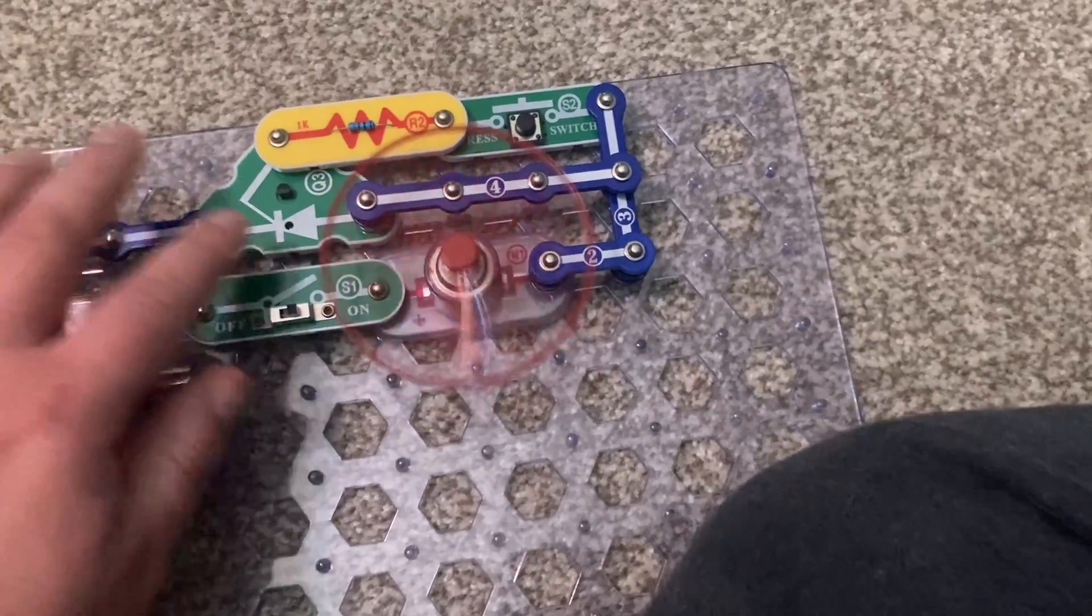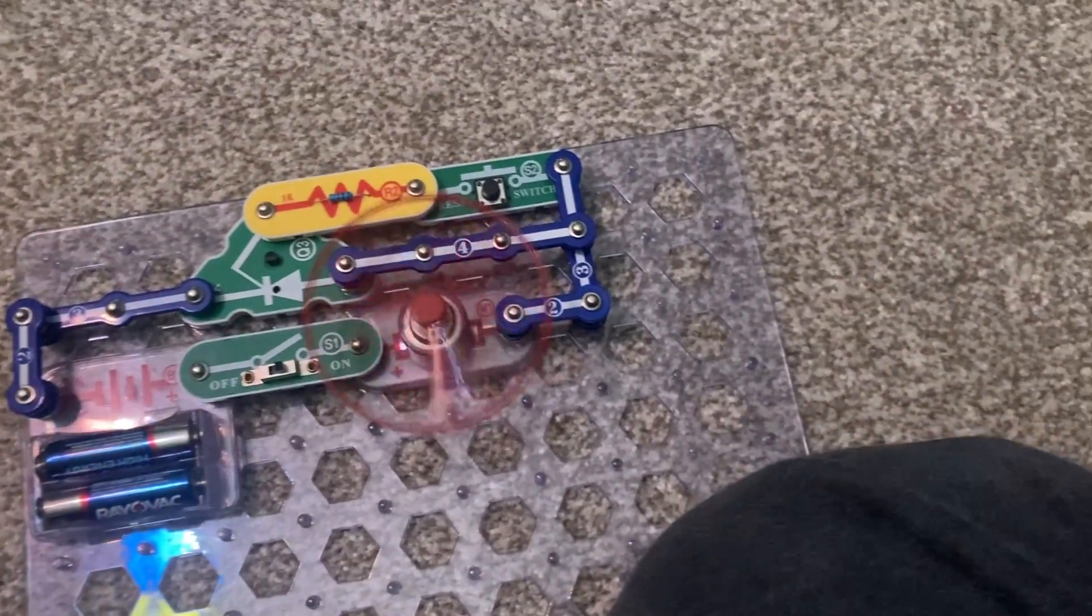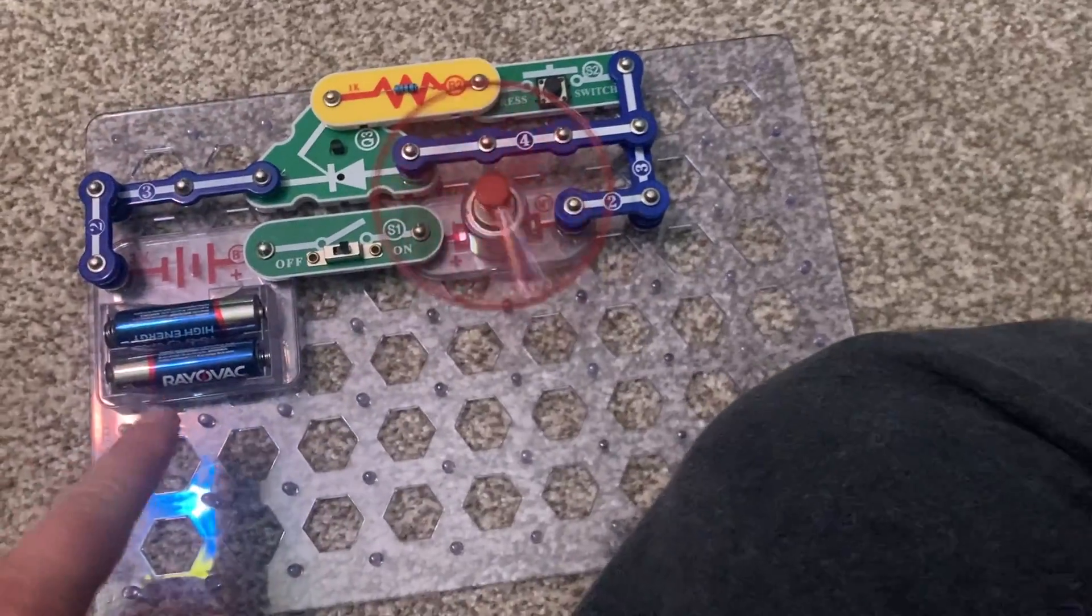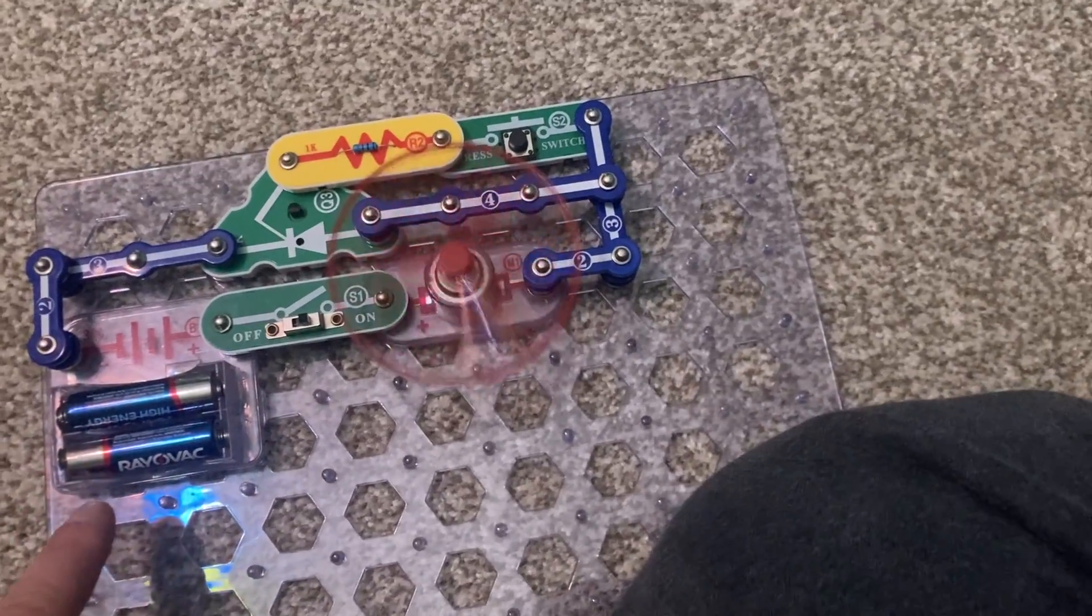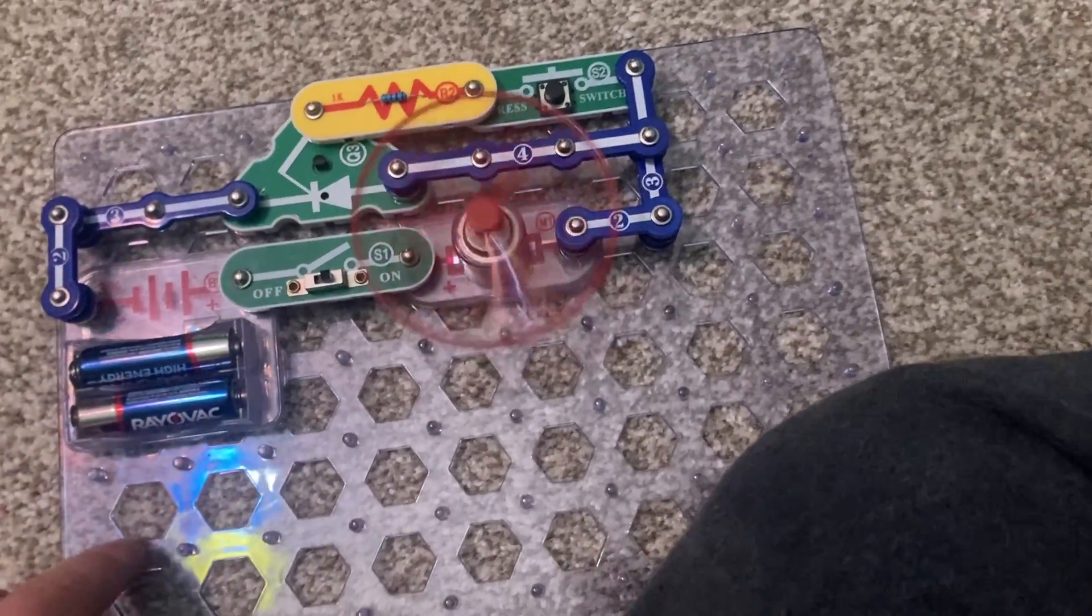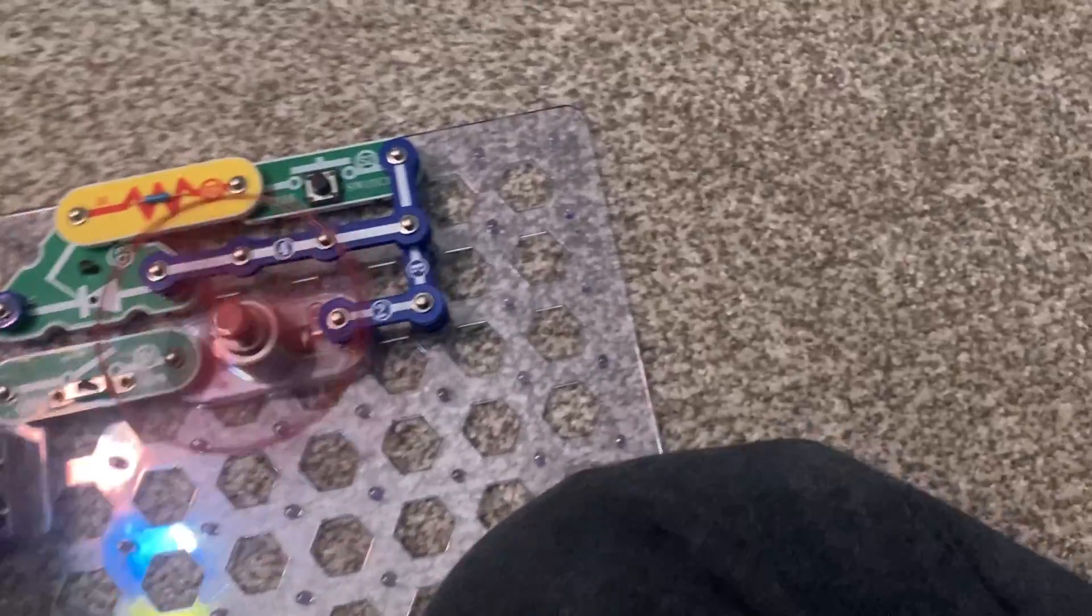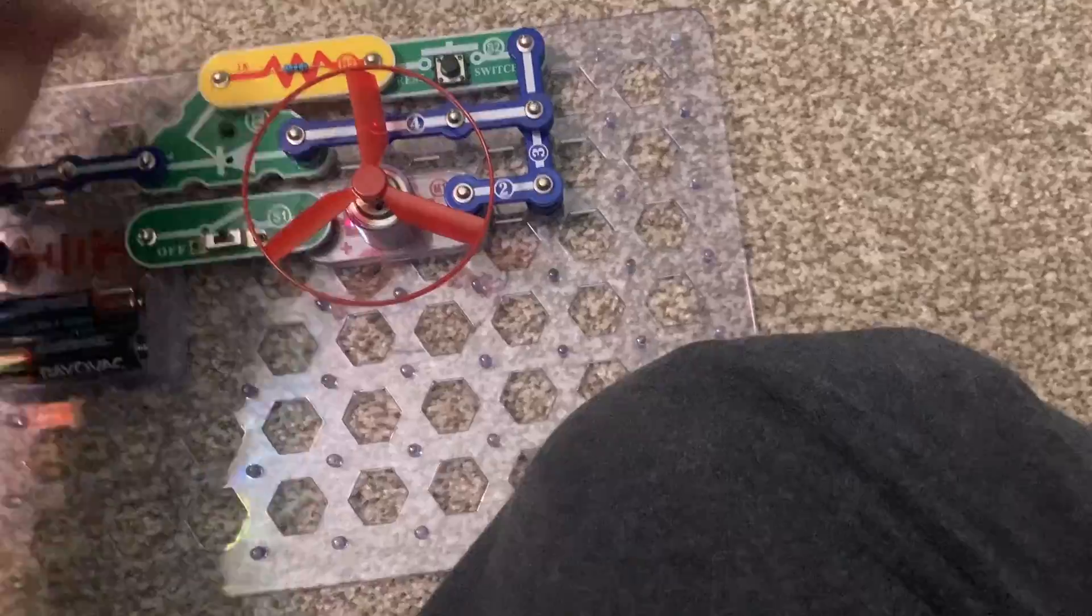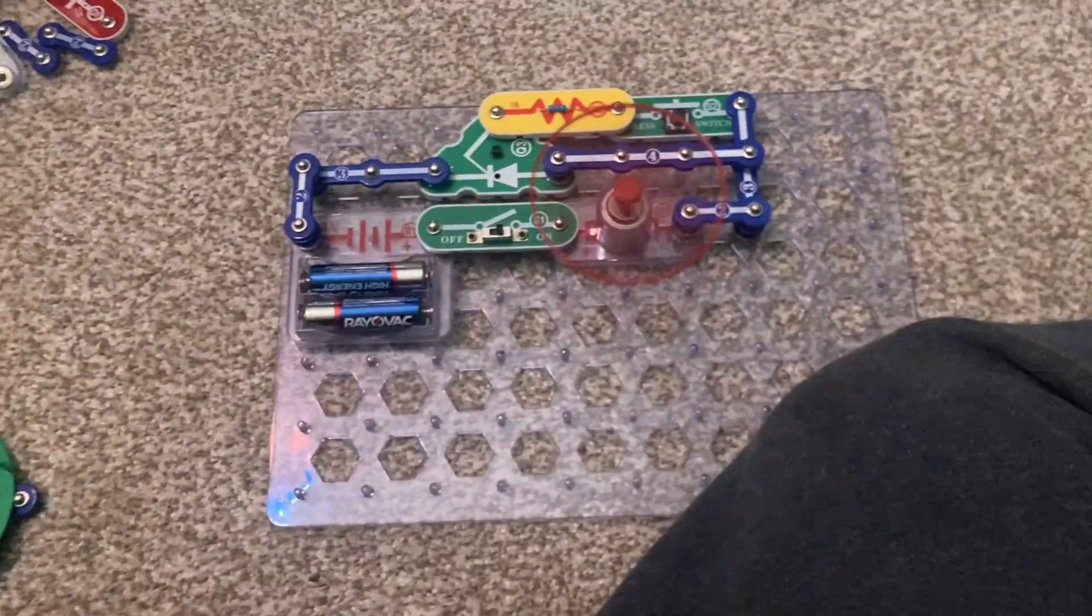In this circuit, the gate of the Q3 resistor is connected to the batteries via the R2 resistor. The motor will spin until I turn the slide switch off. Turn it back on and push the press switch and there you have it.